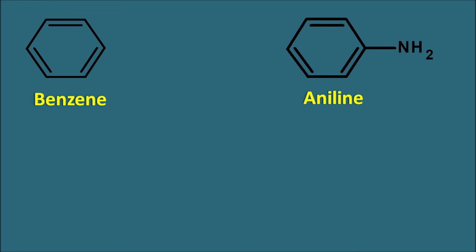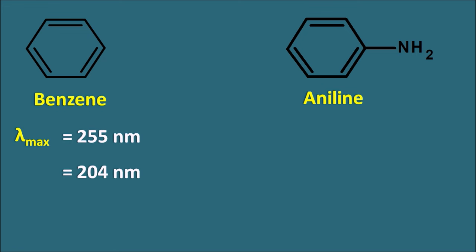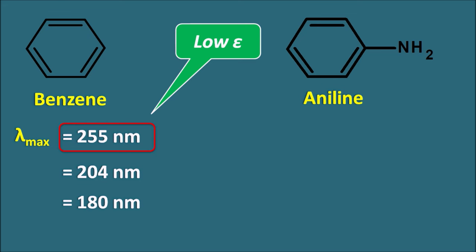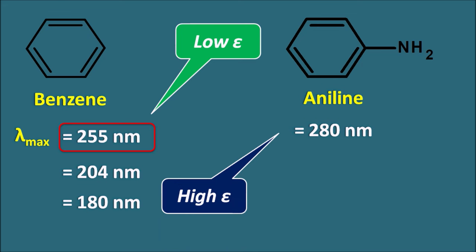Let us take two examples: benzene and aniline. Benzene shows three absorption peaks — one at lambda max of 255 nm, another at 204 nm, and a third at 180 nm. The peak at 180 nm is the strongest, but practically we cannot study peaks below 200 nm, so the 255 nm peak is more important. Unfortunately, this peak has a low epsilon value. Epsilon is the molar absorptivity, which indicates the absorbing capacity of a particular transition. In aniline, one peak appears at 280 nm, corresponding to the 255 nm peak in benzene, and this peak has a higher epsilon value compared with the benzene peak.